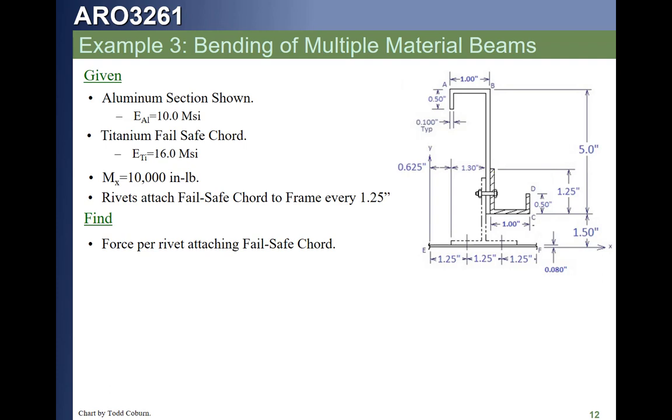So the Q of that, which means we're going to have three terms in our Q calculation. We've got a 1.25 by 0.1 inch part piece. We have a 0.5 by 0.1 inch piece, and we have a 0.8 by 0.1 inch piece. Each of those has a different Y minus Y bar to the centroid, and once we calculate that, we can calculate the force per nail.